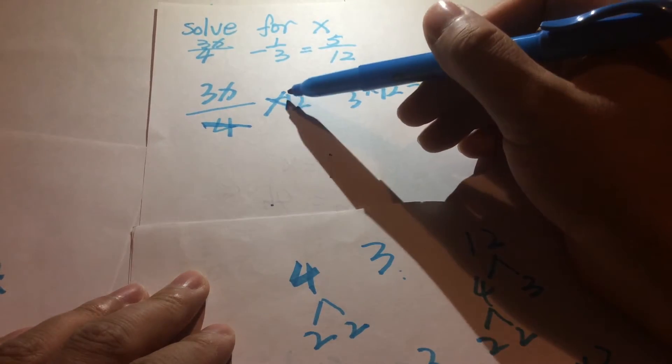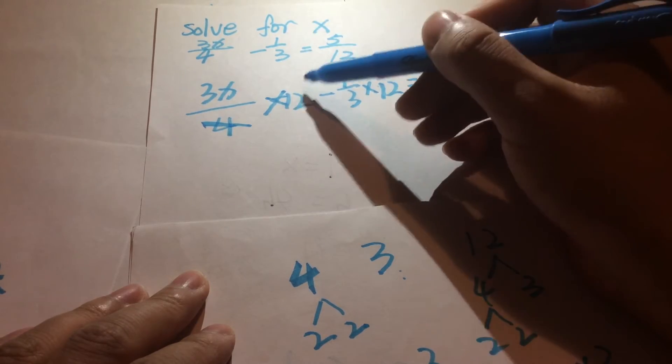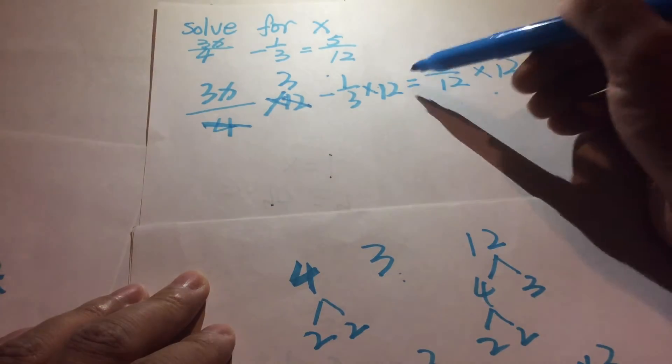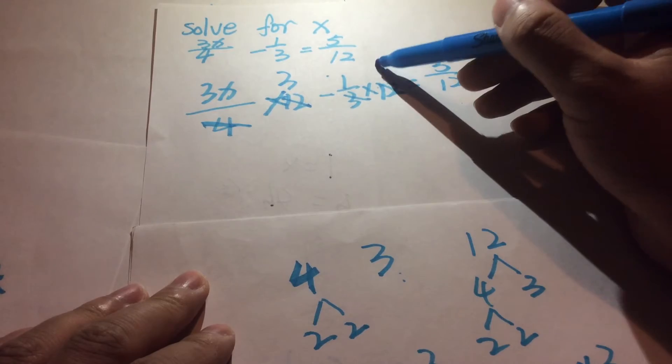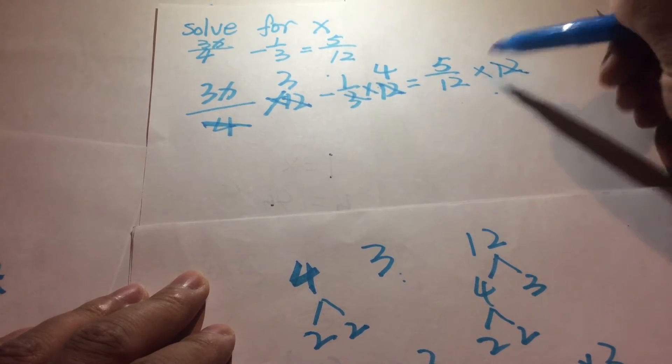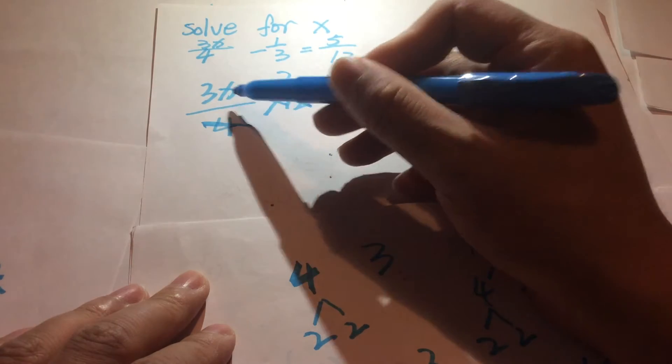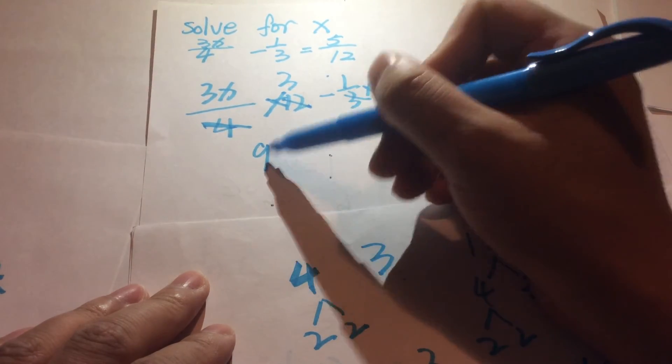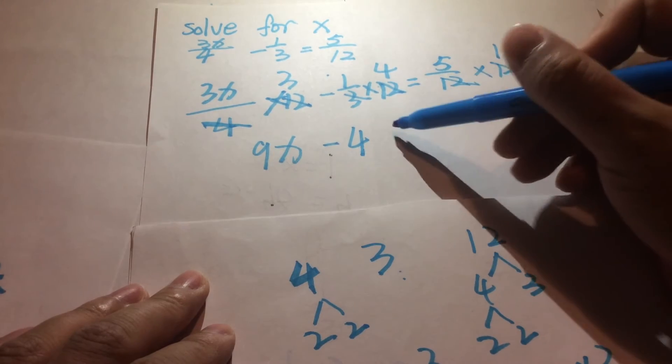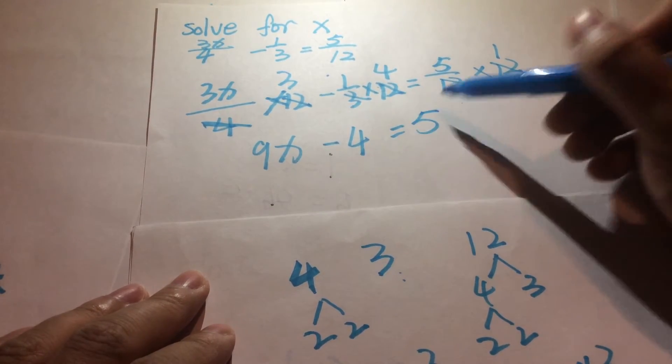So 12 divided by 4 is going to be 3, 12 divided by 3 is going to be 4, 12 divided by 12 is 1. So here on the left is 3x times 3, that's going to be 9x minus 4 equals 5 times 1, that's going to be 5.